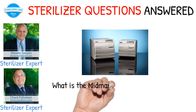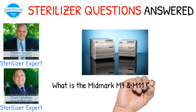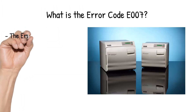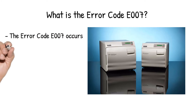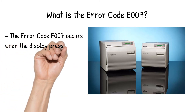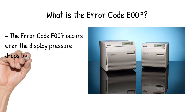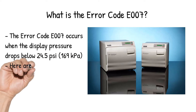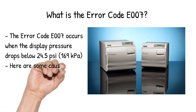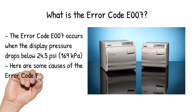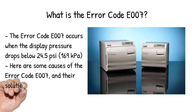What is the Midmark M9 and M11 Error Code E007? The error code E007 occurs when the display pressure drops below 24.5 pounds per square inch, 169 kilopascals. Here are some causes of the error code E007 and their solutions.